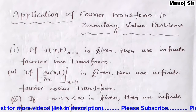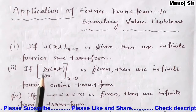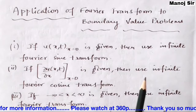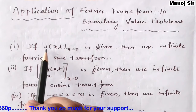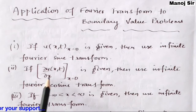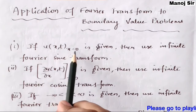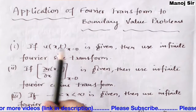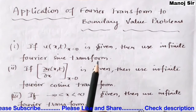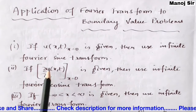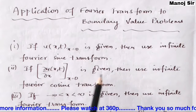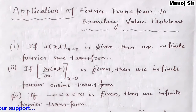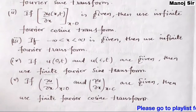The second point: if ∂u/∂x, which is a function of x and t, is given at x equal to zero, then we need to use the infinite Fourier cosine transform. So to summarize: if u is given at x = 0, use infinite Fourier sine transform; if ∂u/∂x is given at x = 0, use infinite Fourier cosine transform.